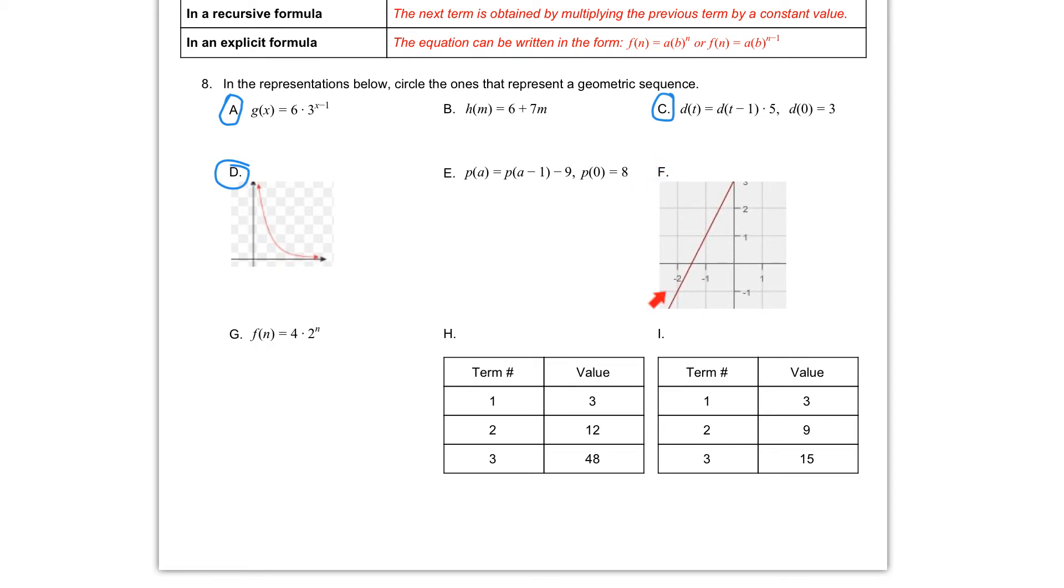If we take a look at f, f we have a straight line. A straight line indicates that we have an arithmetic sequence and not a geometric sequence. So f is not going to be one of our choices.